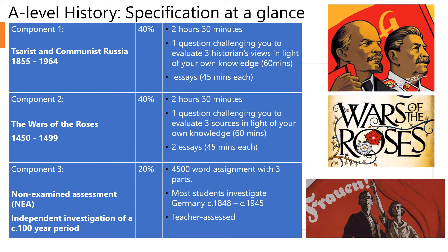As you can see from the information here, component one and component two make up 80% of the course, and this part of the course is examined. These examinations are 2 hours 30 minutes in length, and both component one and component two will effectively get you to write three essays. This is very different to GCSE, where you have lots of short answer questions and very little time to plan and think. Our students in A-level history always comment about how liberating and enjoyable it is to have the time and space to think, argue, and write extended answers to questions they genuinely have a view on.